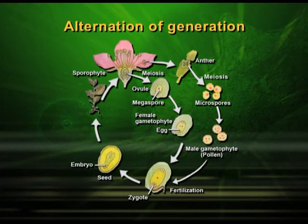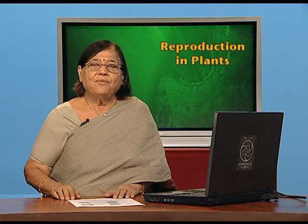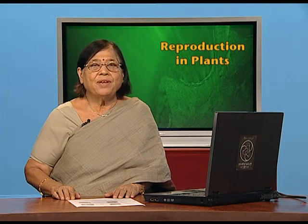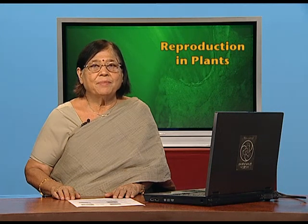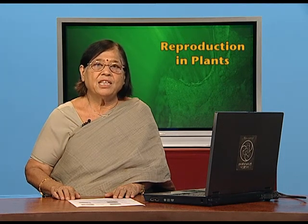I will now explain alternation of generation, which means gametophyte producing sporophyte and sporophyte producing gametophyte. Unless this is happening, the life cycle of the plant will not be complete. To understand gametophyte — haploid or diploid — and sporophyte — haploid or diploid — and how they alternate, we can understand what is happening in alternation of generation. In this session we have discussed bryophytes, pteridophytes, gymnosperms, and angiosperms, and also the concept of double fertilization and alternation of generation including gametophyte generation and sporophyte generation.